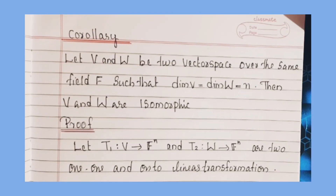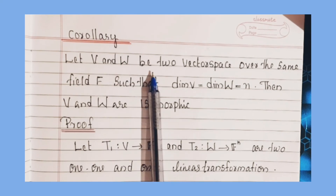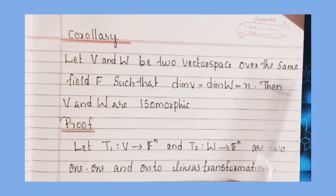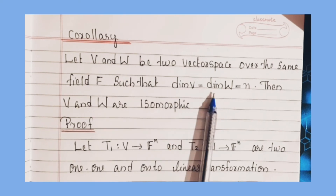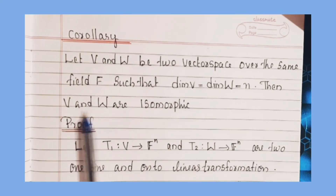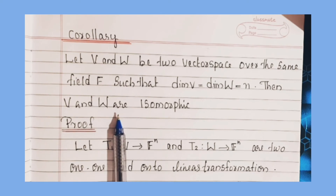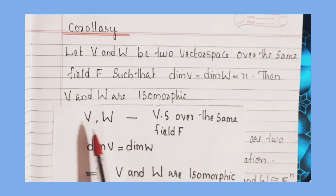Next, a corollary. Corollary statement: Let V and W be two vector spaces over the same field F such that dimension of V = dimension of W = n. Then V and W are isomorphic.